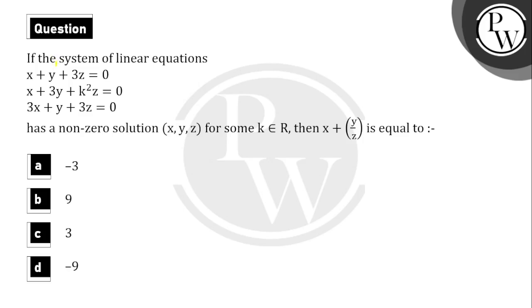Hello guys, let's read the question. The system of linear equations is x plus y plus 3z equal to 0, x plus 3y plus k squared z equal to 0, and 3x plus y plus 3z equal to 0 has a non-zero solution.